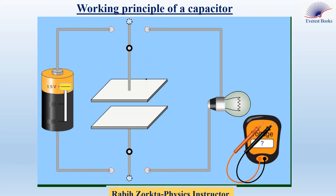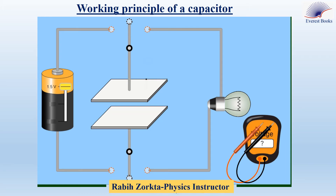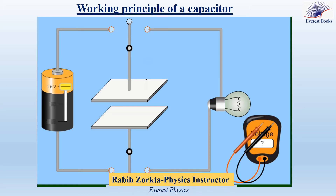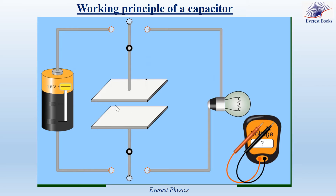This experimental simulation explains the working principle of a capacitor. A capacitor is formed of two conducting surfaces facing each other and separated by an insulating material. In this simulation, the insulating material is air.